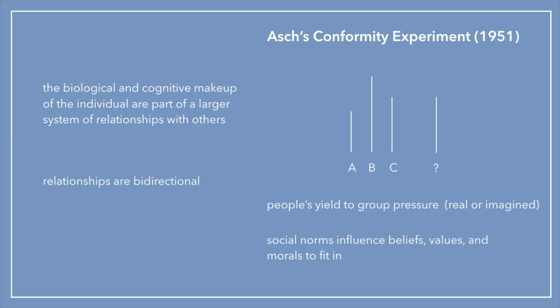This is demonstrated by Asch's conformity experiment conducted in 1951. You don't have to know all the details, but it's good to know a brief summary. The confederates were told to give a fixed answer to a question. The question showed lines labeled A, B, and C alongside a target line, and participants were asked which line was most similar in shape and size. Obviously the answer is C, but Asch wanted to see if people conformed to confederates giving a different answer.